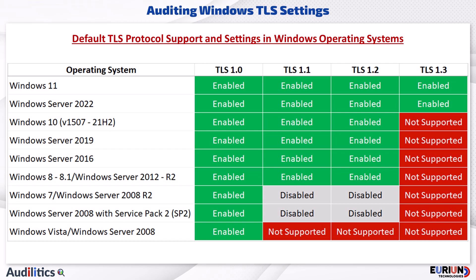We can use Group Policy to perform a bulk update of the TLS settings on all non-compliant systems in a domain. It is important to group the TLS GPO policies by system type due to the settings differences in various versions of Windows.